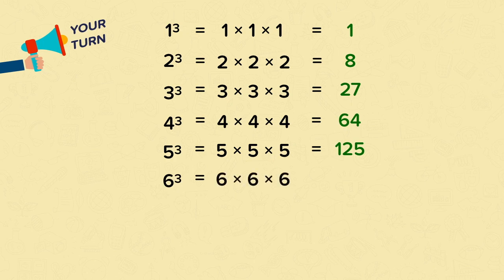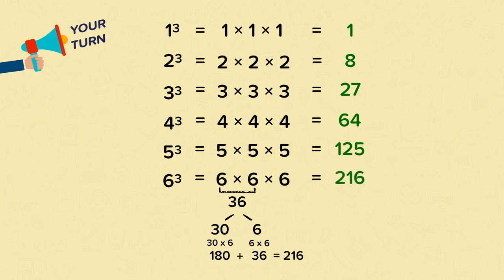So 6 cubed is the same as 6 times 6 times 6. So you should have started with 6 times 6. That's 36. And then you should have done 36 times 6. You could have partitioned 36 to make it easier into 30 and 6. 30 times 6 is 180. 6 times 6 is 36. Add them together to get 216. So 6 cubed is 216.